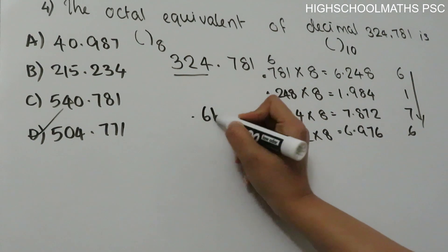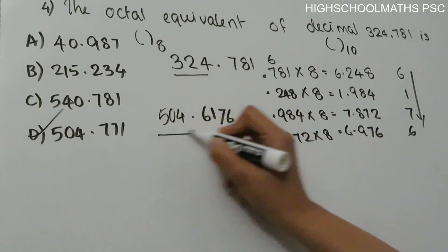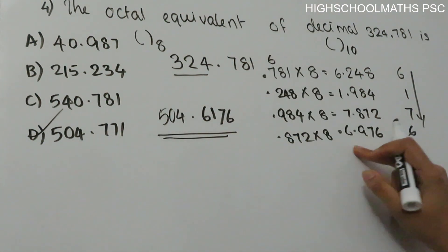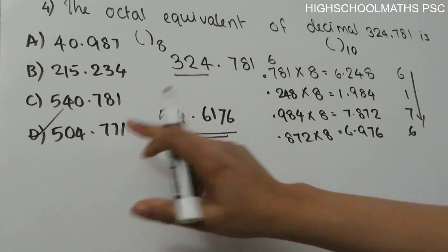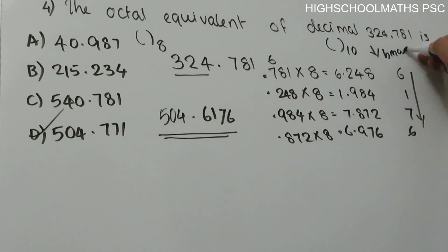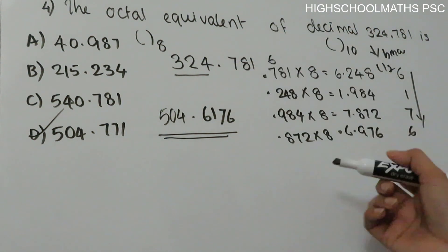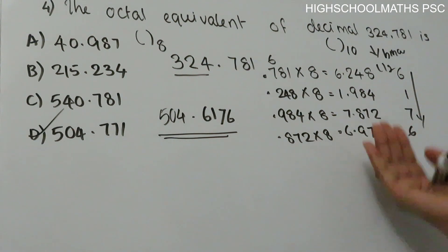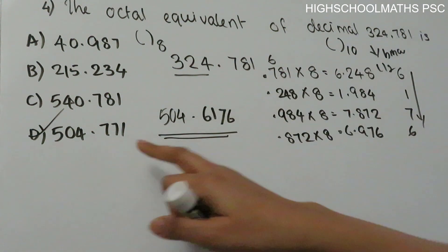After converting 324.781 from decimal to octal, the result is 504.6176, approximately 504.771. To convert an integer part, divide by 8 repeatedly and collect remainders. To convert a fractional part, multiply by 8 and collect integer parts. The answer is Option D: 504.771.